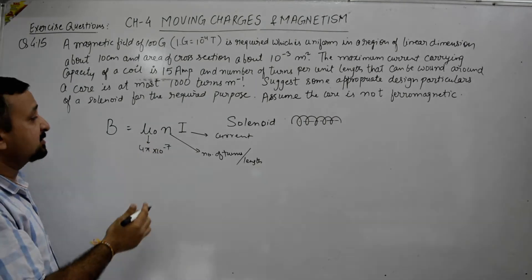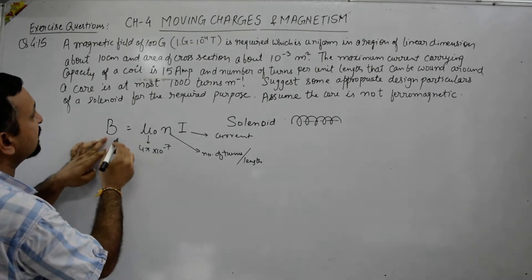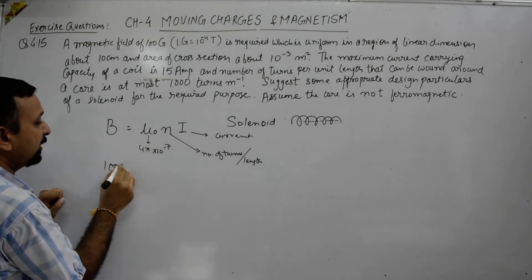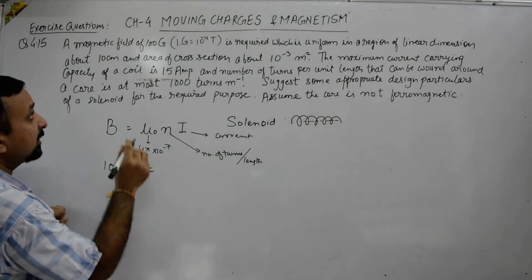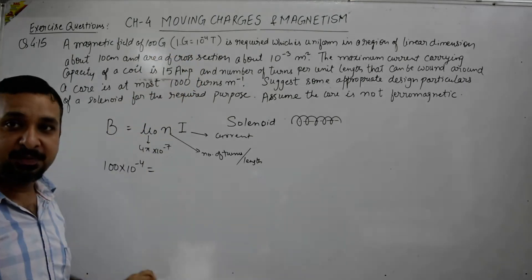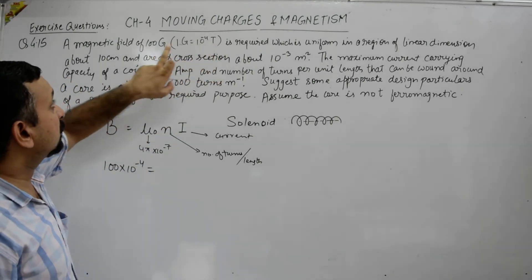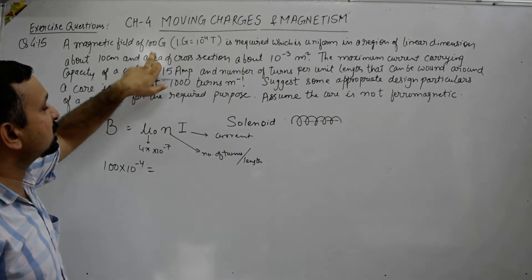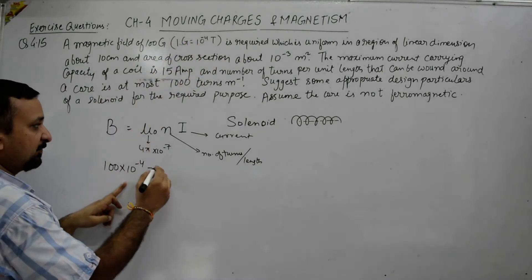Substituting the values: the required magnetic field B is 100 into 10 to the power minus 4 Tesla. This is because 100 gauss needs to be converted to SI units. The standard SI unit of magnetic field is Tesla. So 100 gauss equals 100 into 10 to the power minus 4 Tesla. This is the value of the field we need.